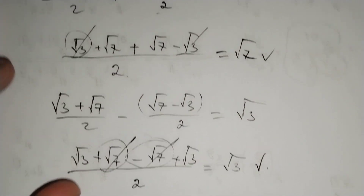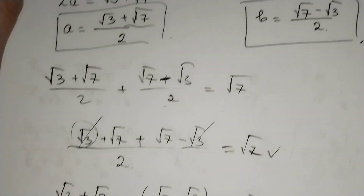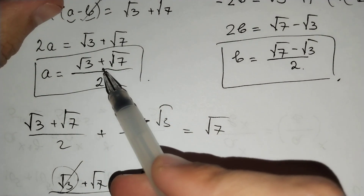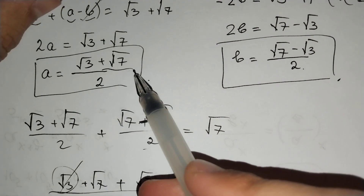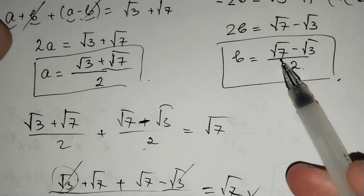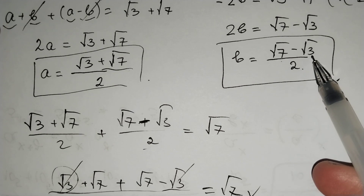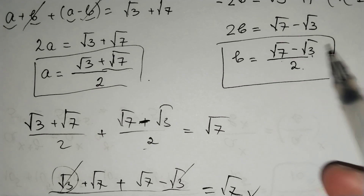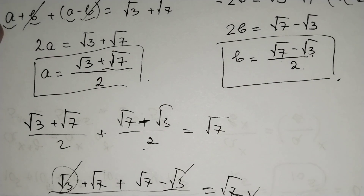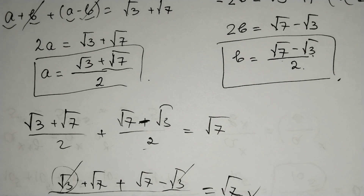Our answers are a equals square root of 3 plus square root of 7 over 2, and b equals square root of 7 minus square root of 3 over 2. Thanks for watching. Don't forget to subscribe to my channel and give a thumbs up to my video.